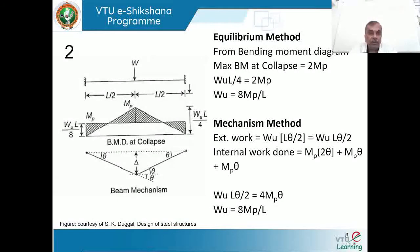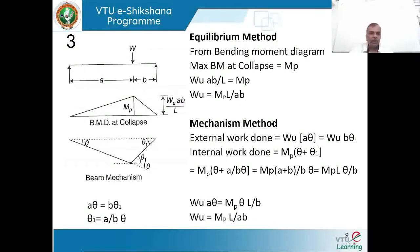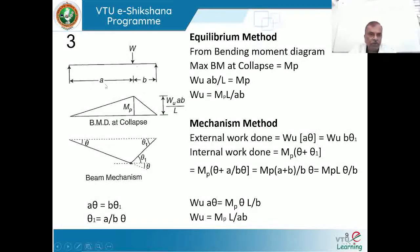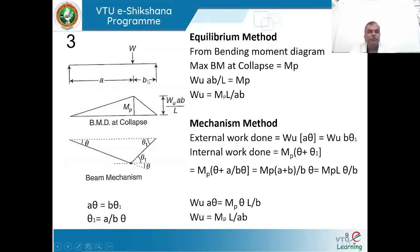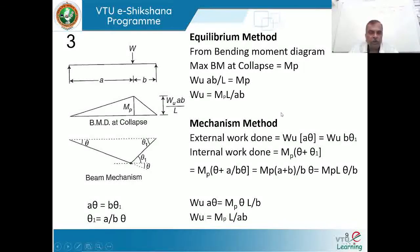Problem 3 is a simply supported beam where the load is not at the center but eccentric. The distance from the left support to the load is A, and from the right support to the load is B, with A + B = L. For any position of load W, we can determine the load carrying capacity and how it changes with position. This is a statically determinate structure, so just one plastic hinge is sufficient to cause failure.